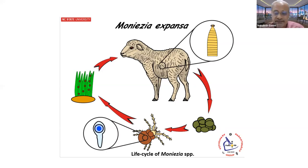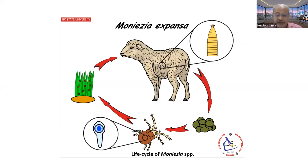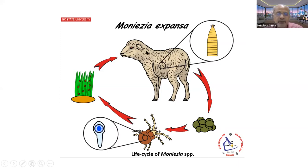Not all species act as intermediate hosts, but about 28 different species act as intermediate hosts for Moniezia and other tapeworms. That is how oribatid mites serve as intermediate hosts, where the infective stages develop, and sheep and goat acquire infection by consuming these oribatid mites.